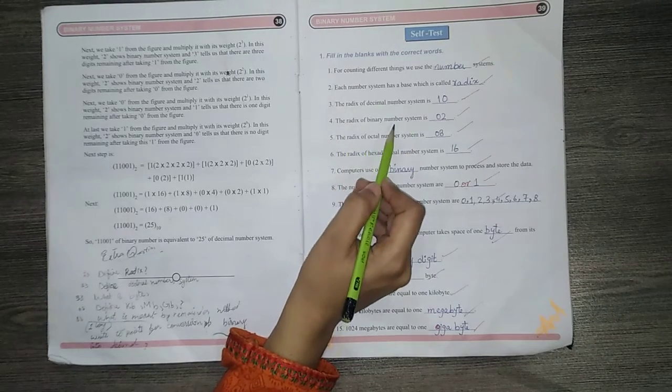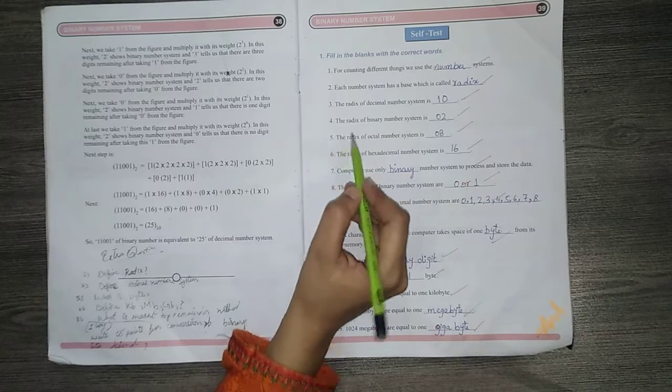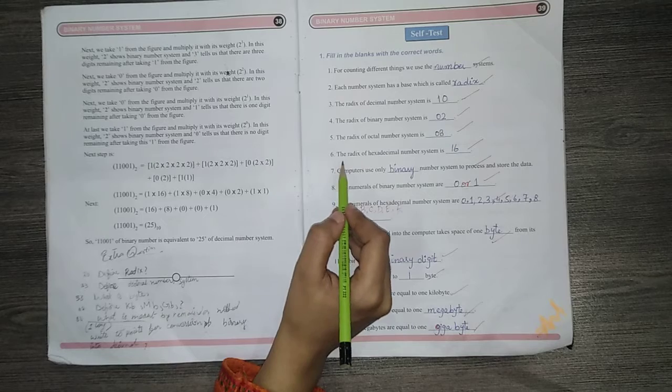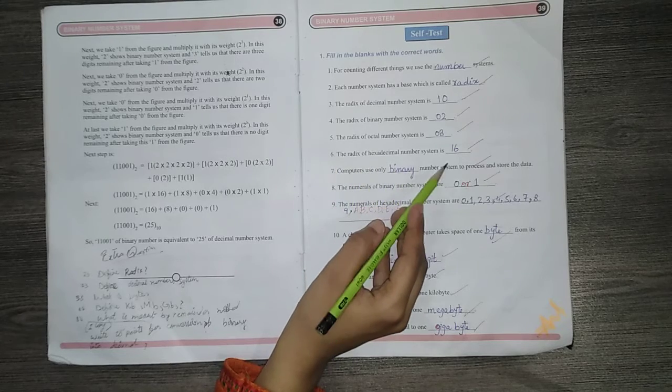Number 4, the radix of binary number system is 2. Number 5, the radix of octal number system is 8. Number 6, the radix of hexadecimal number system is 16.